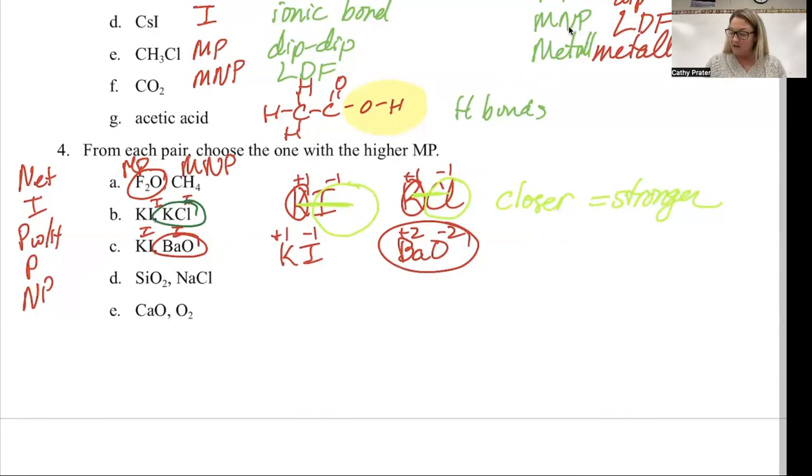For D, SiO2 is network, NaCl is ionic. Network automatically wins.